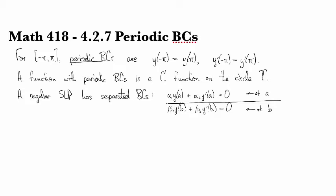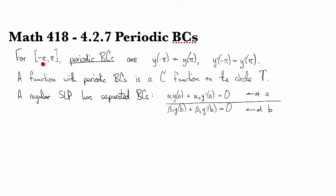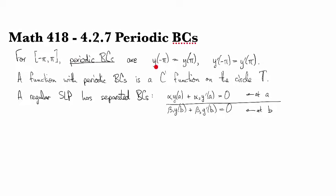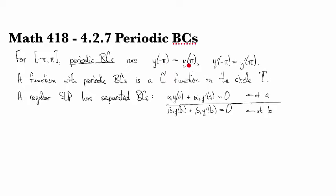A different type of boundary conditions that comes up from time to time is periodic boundary conditions. So for the interval from minus pi to pi, periodic boundary conditions would be setting the value of y to be equal at both ends of the interval,